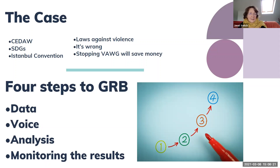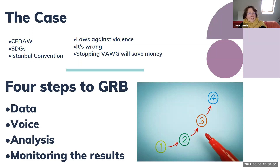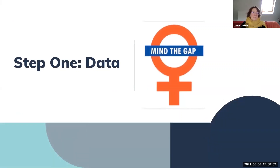I'm going to go through in the next 10 minutes or so the four steps of gender responsive budgeting, using violence against women and girls as the example. The four simple steps everyone can follow are: first, gathering the right data; second, how do you give voice to the women and girls most affected; third, what analysis can you do; and fourth, monitoring and evaluating the results. Let's look at step one — gathering the data.